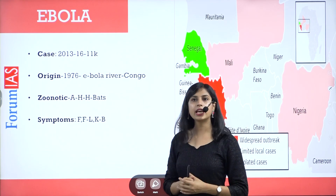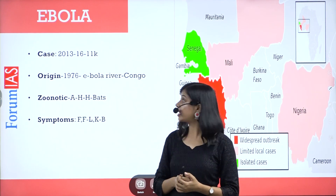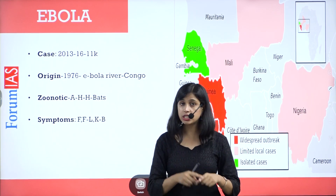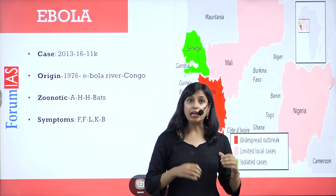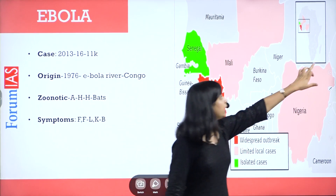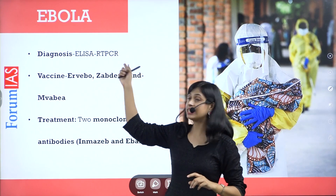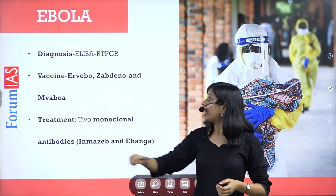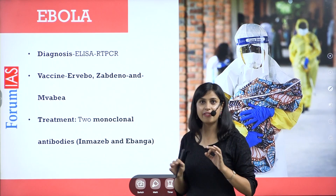Ebola is also a zoonotic disease — it transfers from animals to humans and between humans through fluids. Bats are the natural carrier here as well. Its symptoms include fever, fatigue, liver and kidney damage, and excessive bleeding. Some good news: diagnosis is possible with ELISA test and RT-PCR. Earlier, it was difficult to identify because symptoms resembled malaria. Now, vaccines have been developed: Ervebo, Zabdeno, and Mvabea.